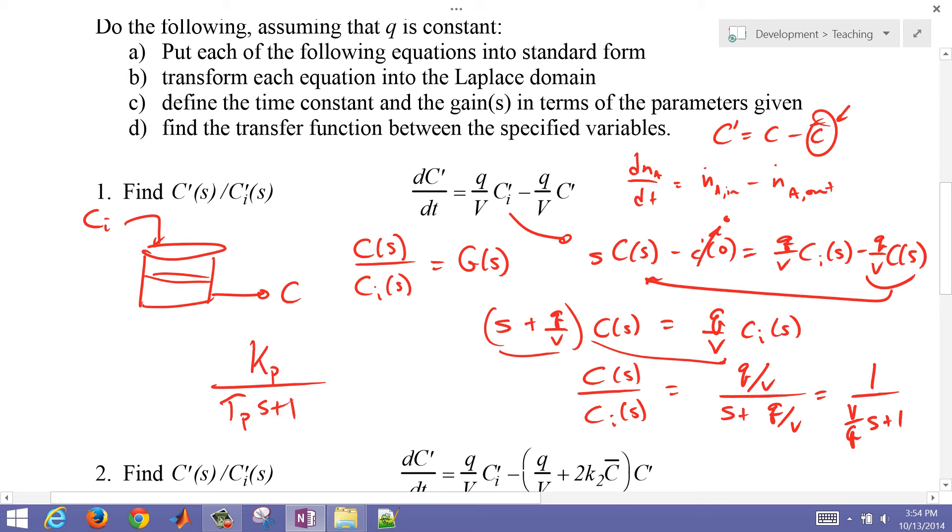So I immediately see here, if I put it into my standard form, Kp over tau_P S plus 1, that the gain is going to be equal to 1. So that makes sense.